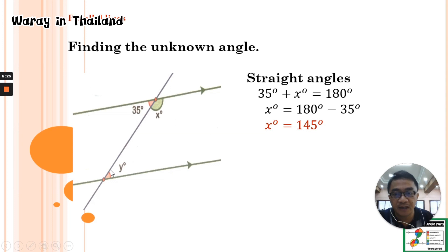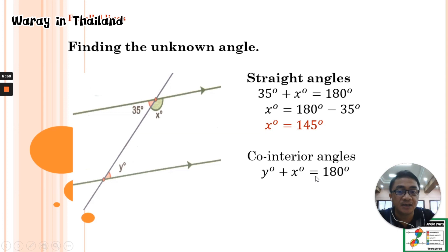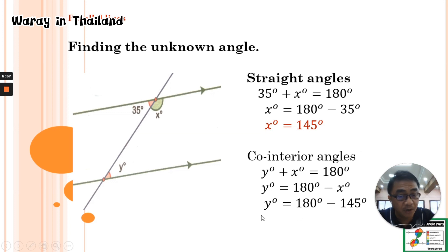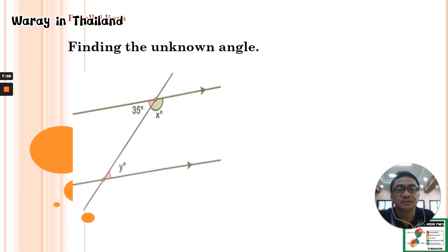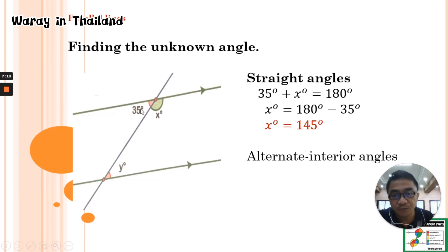To find angle Y, we can use co-interior angles or alternate interior angles. Using co-interior angles, angle X plus angle Y equals 180 degrees. Since angle X is 145 degrees, angle Y equals 180 minus 145, which is 35 degrees. We can verify using alternate interior angles: angle 35 degrees equals angle Y, confirming angle Y equals 35 degrees.